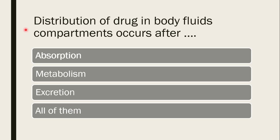Next question: distribution of drug into body fluid compartments occurs — after absorption, after metabolism, after excretion, or all of them? The correct answer is after absorption. Once the drug is absorbed, it gets distributed into body fluid compartments, then undergoes metabolism, and then excretion.